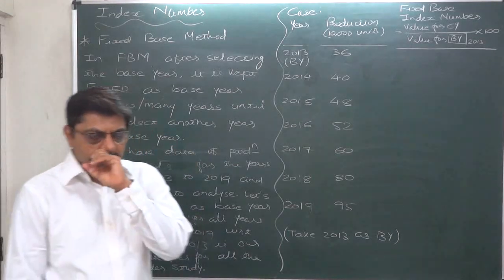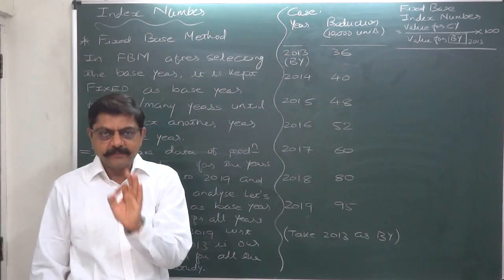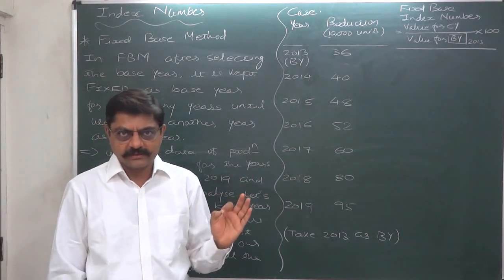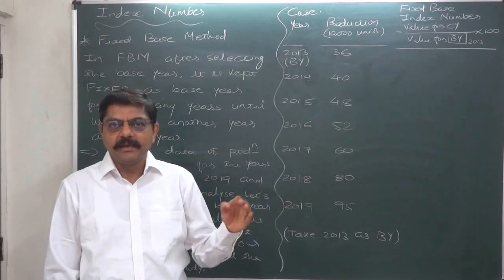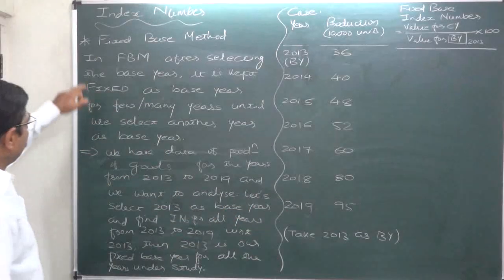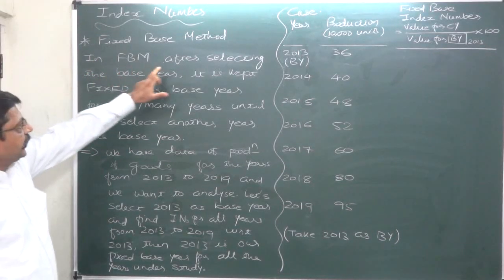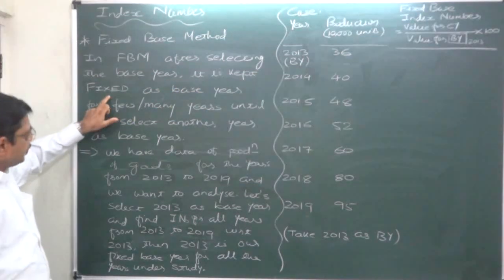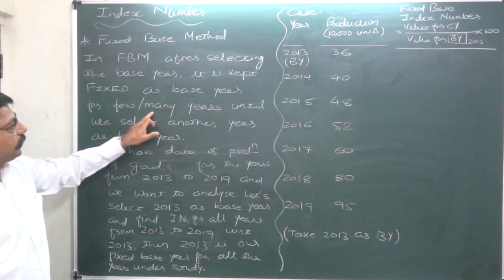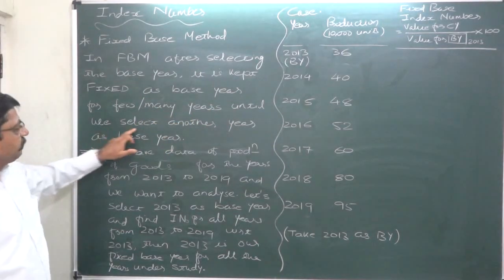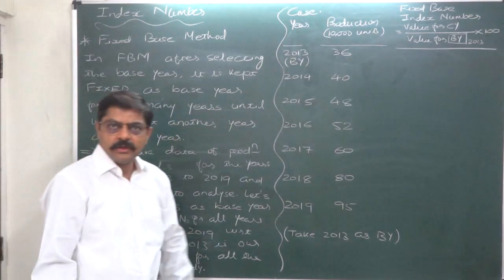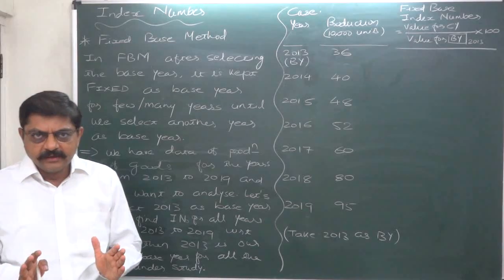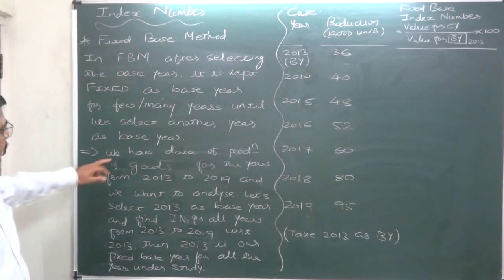What do we mean by the word 'fixed base'? Fixed base means the base year is kept fixed for a series of years until we determine a new base year. In the fixed base method, after selecting the base year, it is kept fixed as the base year for few or many years until we select another year as base year.